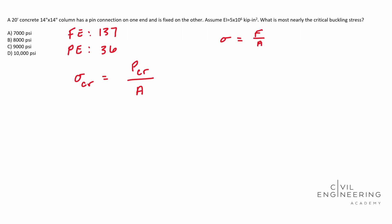So in this case, our PCR is equal to—there's another formula they have—pi squared EI over K L squared.